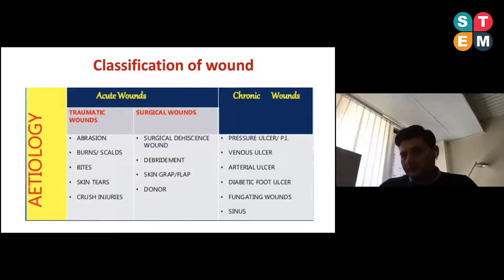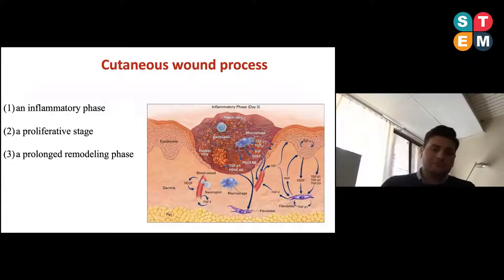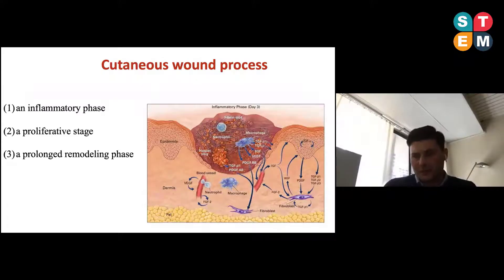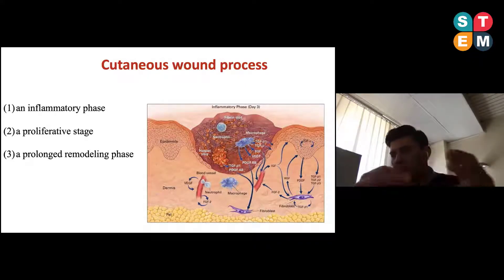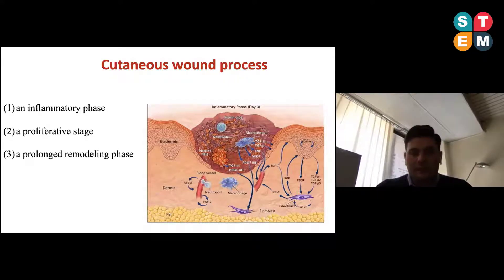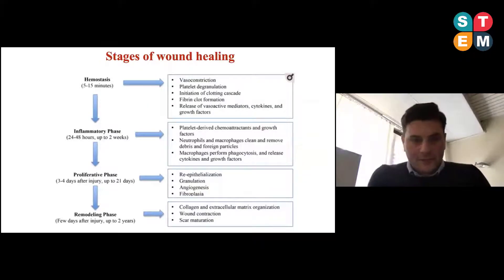After a wound occurs in the skin, we have sequential phases that constitute the physiology of the normal wound healing process. We have a first step — the inflammatory phase — followed by a proliferative stage, and then the final stage, the prolonged remodeling phase, which serves as restoration of the normal skin structure.